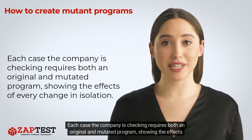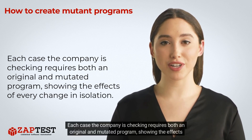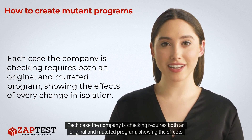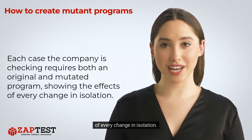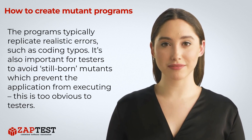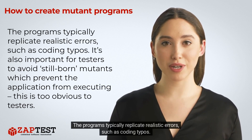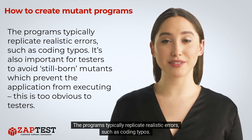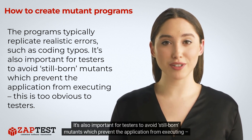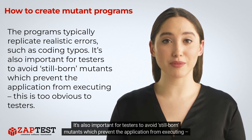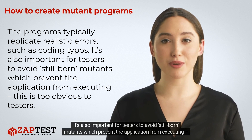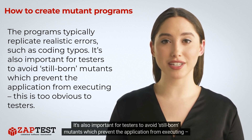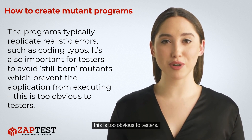Each case the company is checking requires both an original and mutated program, showing the effects of every change in isolation. The programs typically replicate realistic errors, such as coding typos. It's also important for testers to avoid stillborn mutants, which prevent the application from executing — this is too obvious to testers.